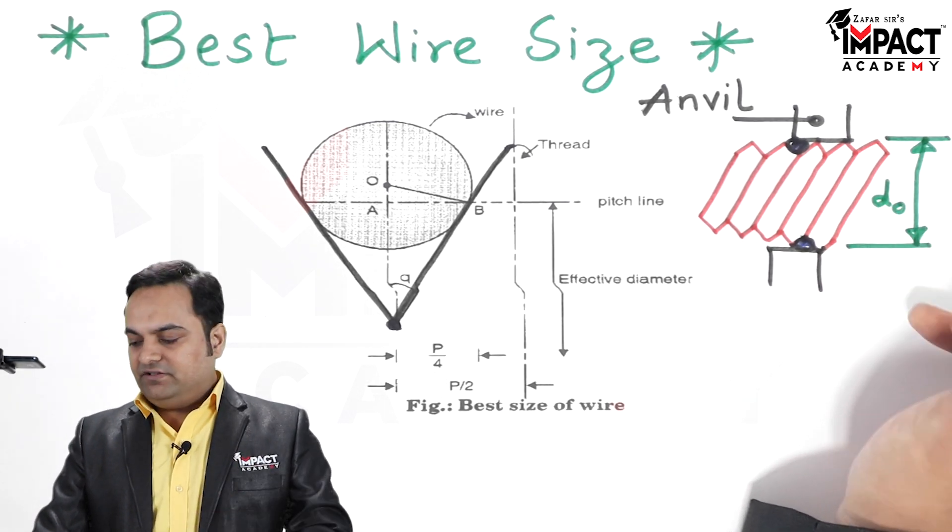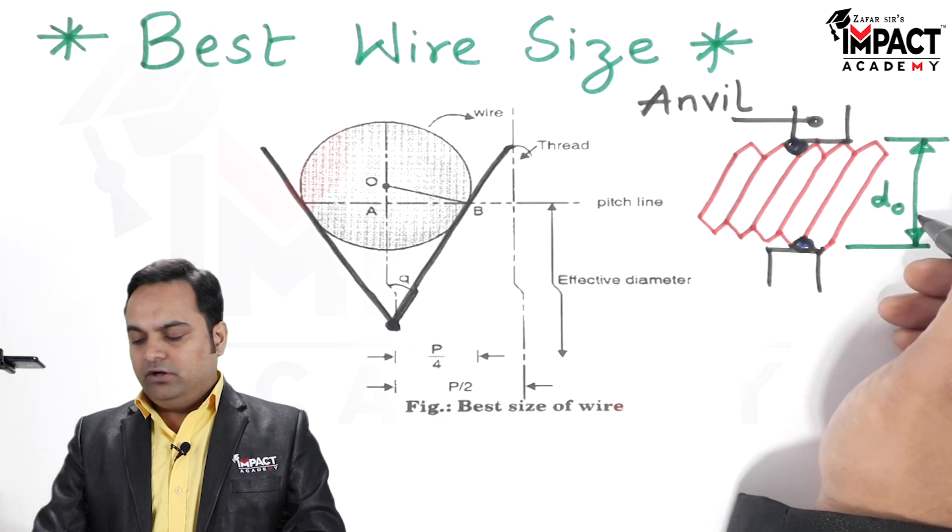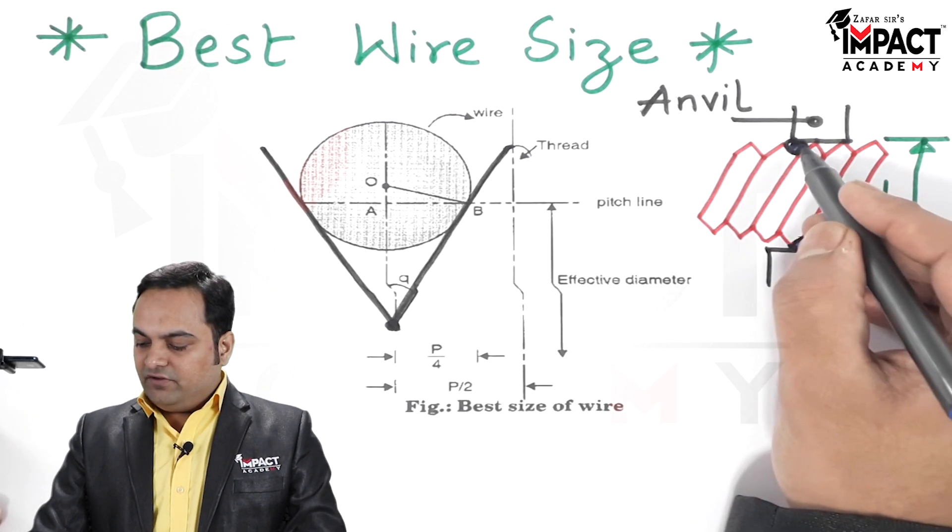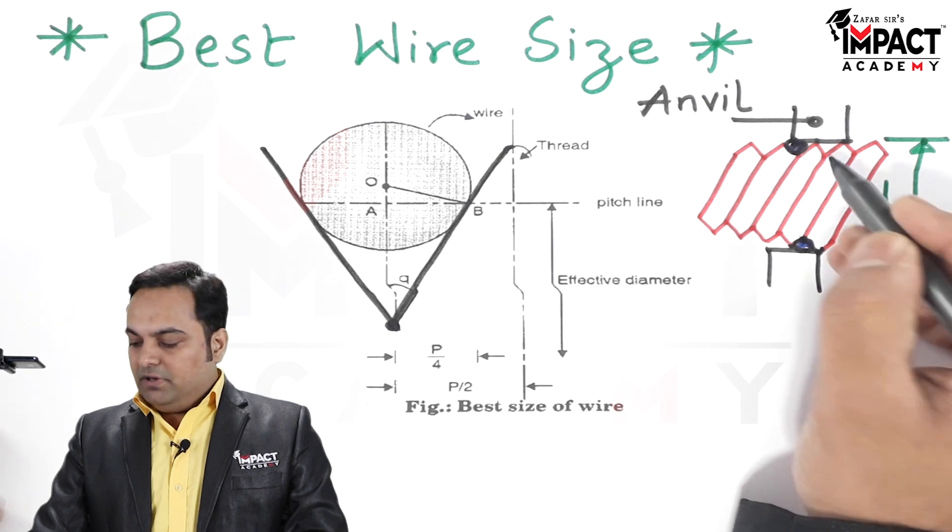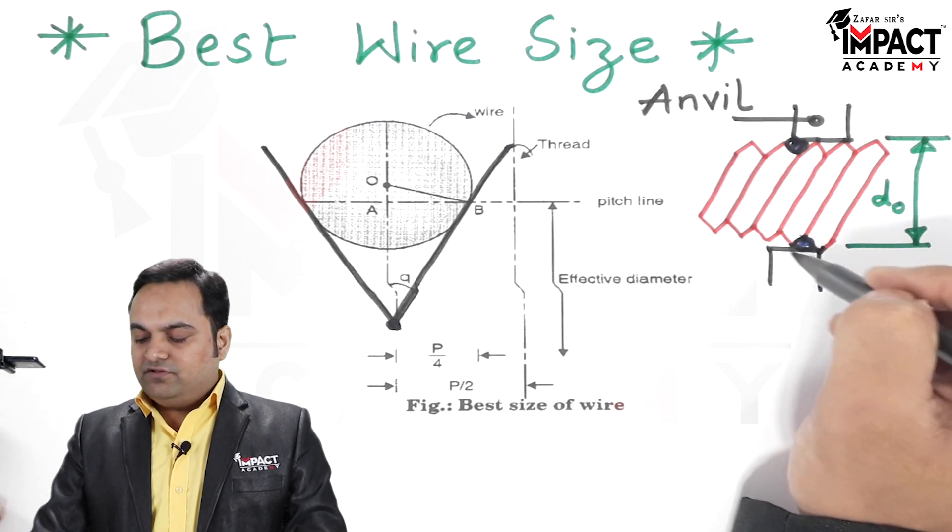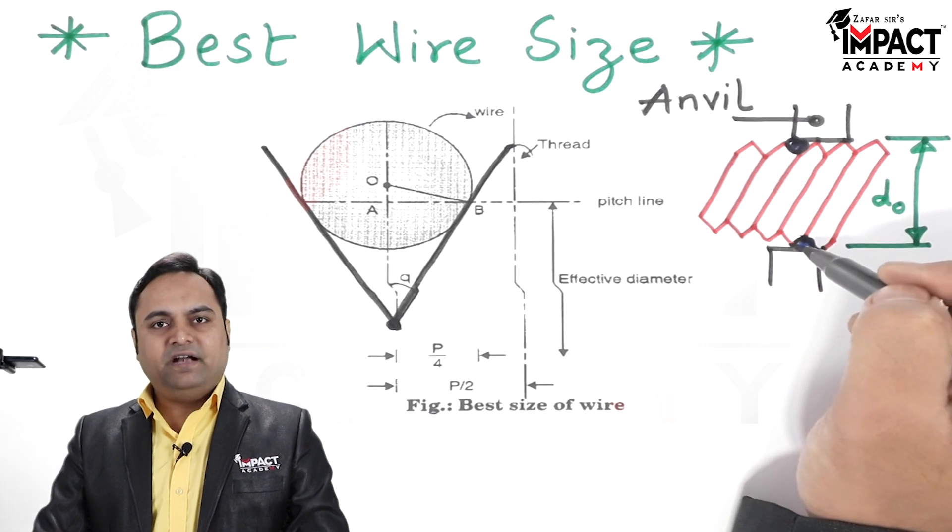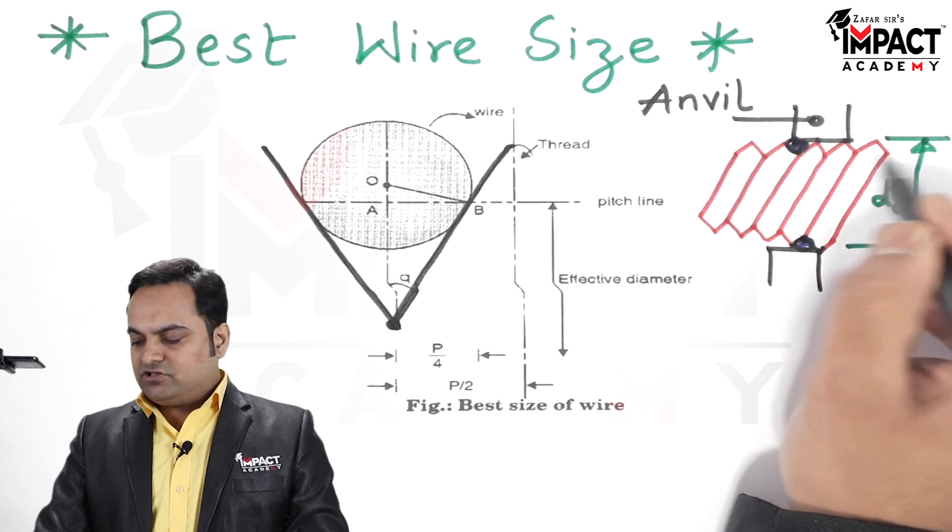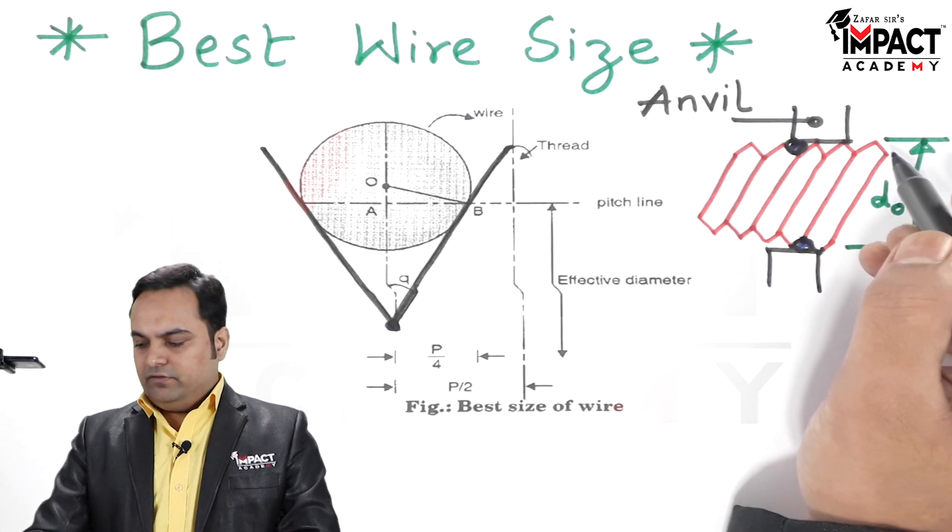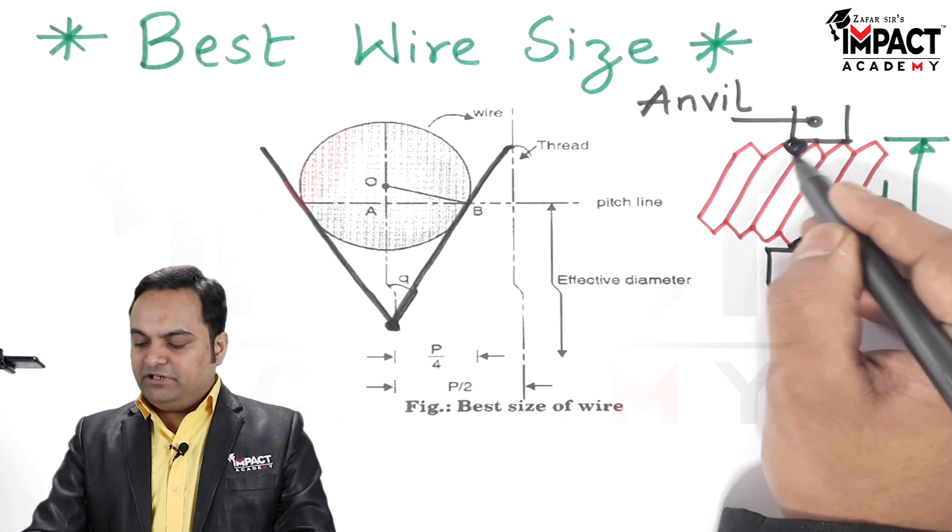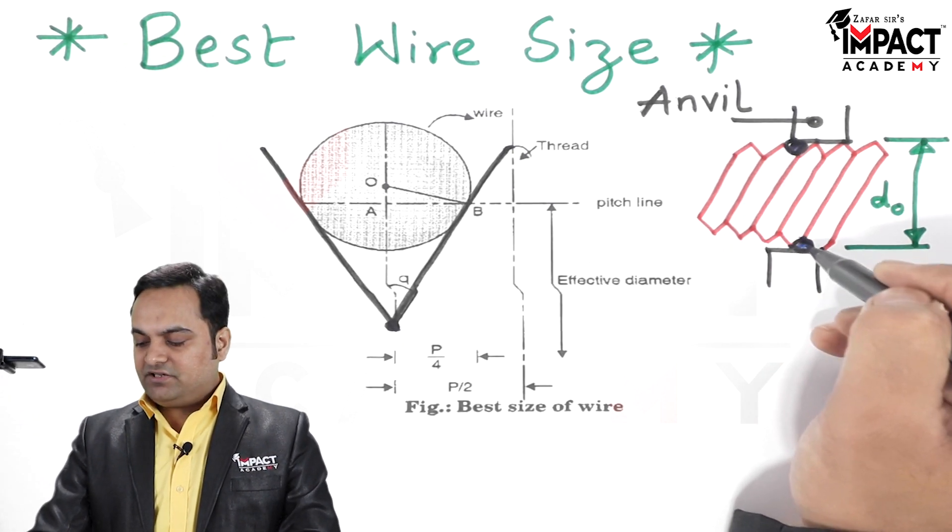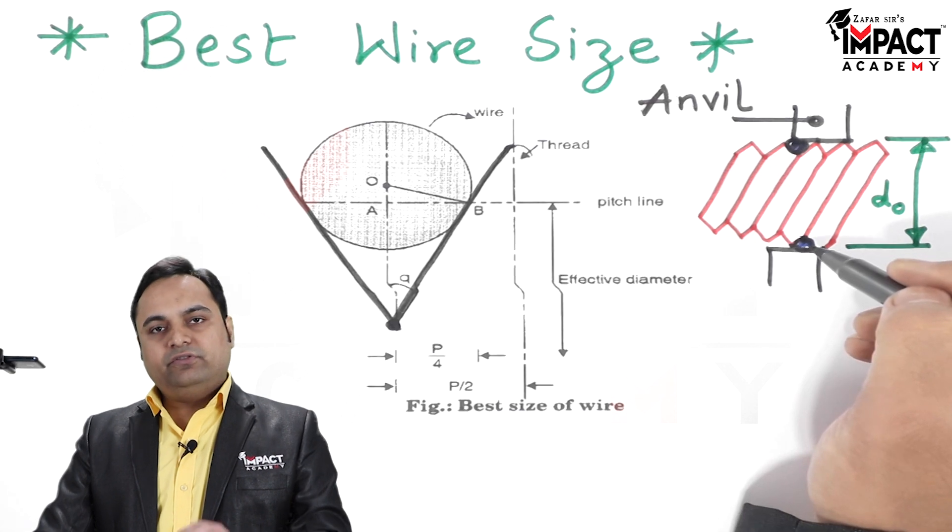And with the help of that, the chances of errors in the reading of D_O would be reduced. So that is why we have to use the wires. But the diameter of the wire which we are going to select, that is important. We cannot use any random diameter here. For a given screw thread we need to calculate, we need to know how much diameter of wire should be placed in between the V grooves.